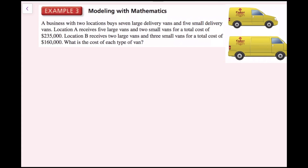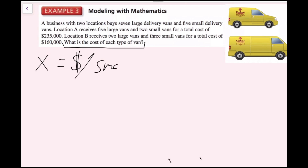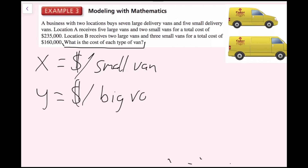For Example 3, a business with two locations buys 7 large delivery vans and 5 small delivery vans. Location A receives 5 large vans and 2 small vans for a total cost of $235,000. Location B receives 2 large vans and 3 small vans for a total cost of $160,000. What is the cost of each type of van? First, define variables: let x equal the cost in dollars of a small van, and y equal the cost of a large van.